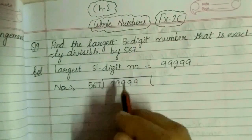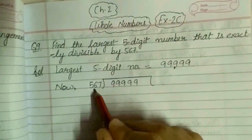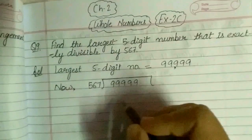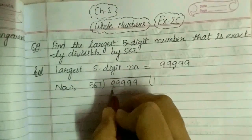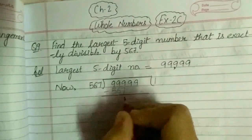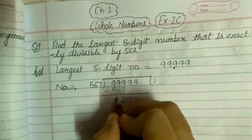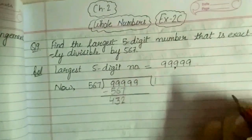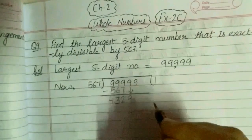Now what we will do? We will divide this number by 567. 567 ones are 567. Subtract them. 9 minus 7 will give me 2, 9 minus 6 will give me 3, 9 minus 5 will give me 4. And this 9 will be carried down.